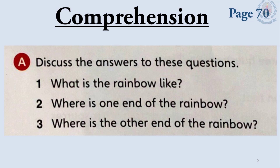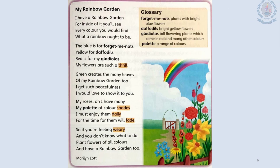Let's do Comprehension Part A. First question: What is the rainbow like? The rainbow is like a colored bridge. Second question: Where is one end of the rainbow? One end of the rainbow is in the sea. Third question: Where is the other end of the rainbow? The other end of the rainbow is in the field with the poet.